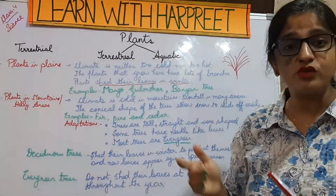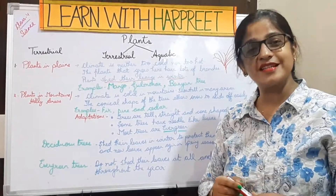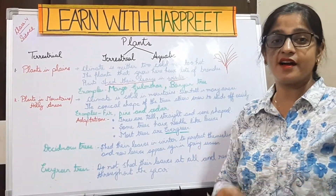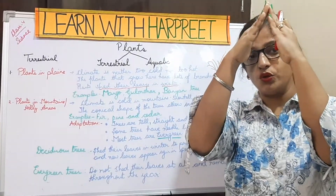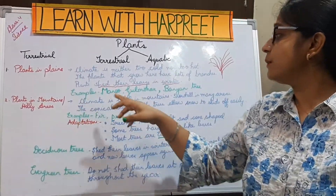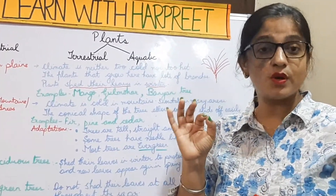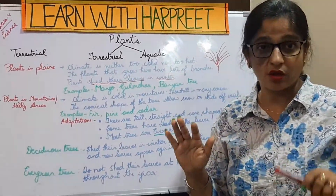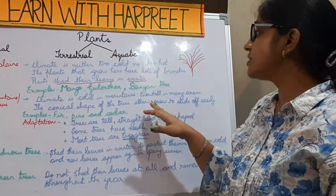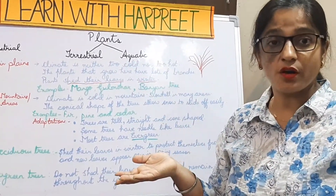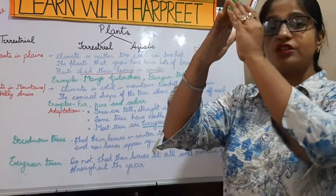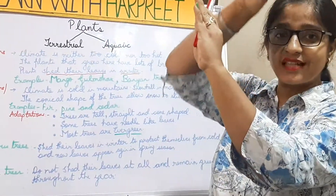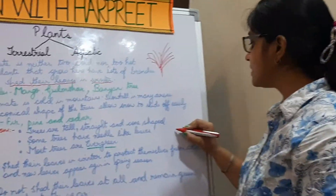Now, plants that grow in mountains or hilly areas — have you been to mountains or hilly areas? There are trees with a conical shape, like a cone. The climate is very cold in mountains, extremely cold. In many areas there is snowfall. The conical shape of the trees allows the snow to slide off easily through the slopes — that is why they have a cone-like structure.